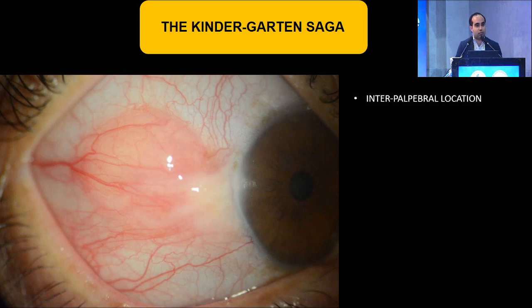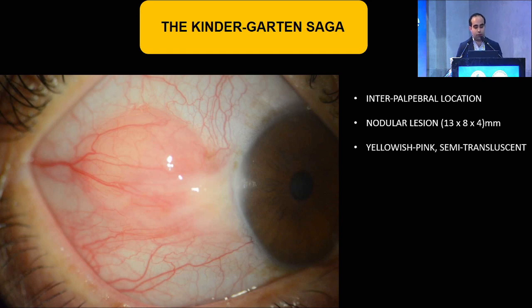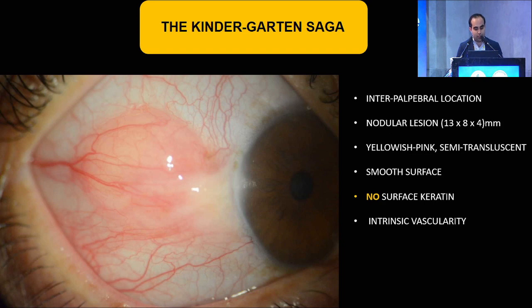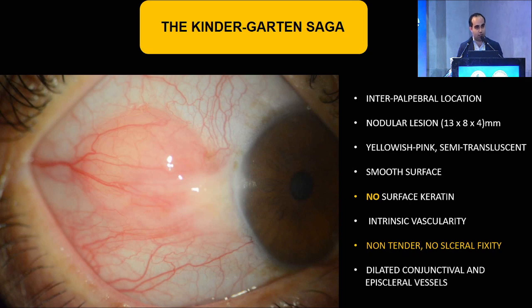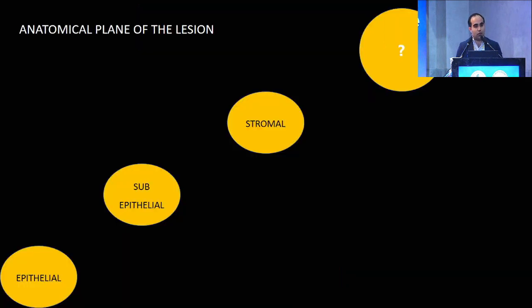It is in the interpalpebral location, a nodular lesion of such-and-such measurement, yellowish pink, semi-translucent, smooth surface, no surface keratin. Note the intrinsic vascularity — yes, appreciable — non-tender, no scleral fixity, dilated conjunctival and episcleral vessels. To decide upon the plane of the lesion clinically: yes, it is an apobalbar mass.